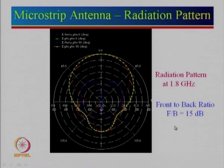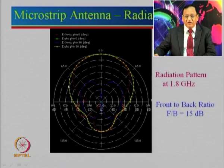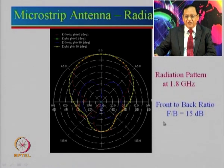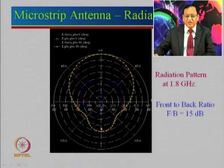This example shows the radiation pattern of the microstrip antenna at 1.8 gigahertz, the center frequency. There is a yellow curve and a red curve showing the E plane and H plane radiation patterns. You can also see back radiation. We define the front-to-back ratio F/B — each scale is 5 dB, so from maxima to the back level is about 15 dB, giving a front-to-back ratio of about 15 dB.